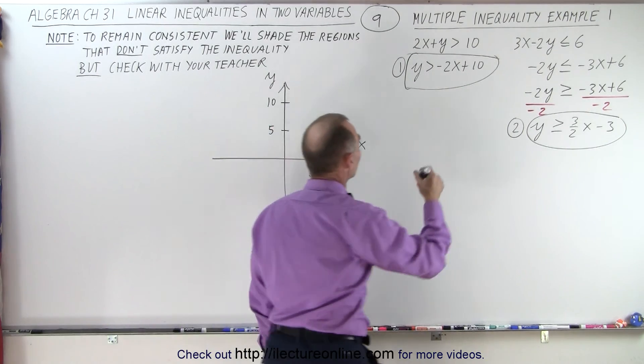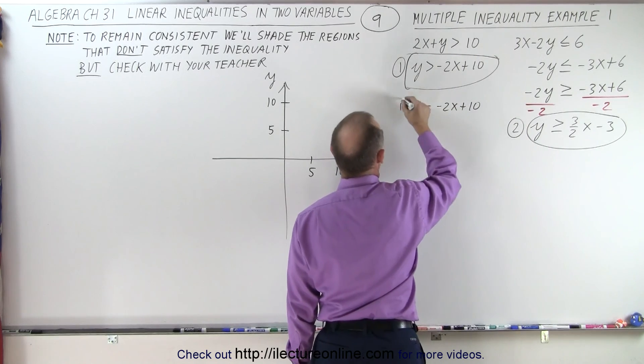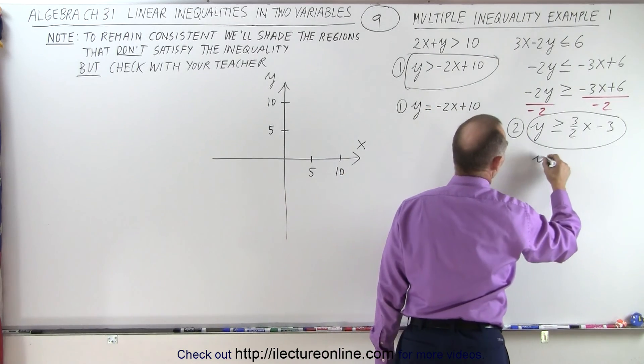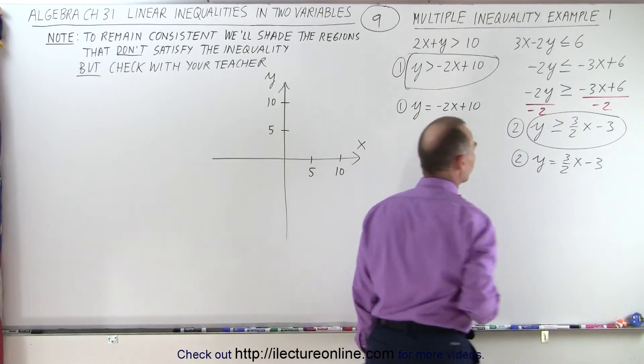Now we're going to turn those into equations. y equals minus 2x plus 10, that's equation number 1. And here we have y equals 3 over 2x minus 3 for equation number 2.